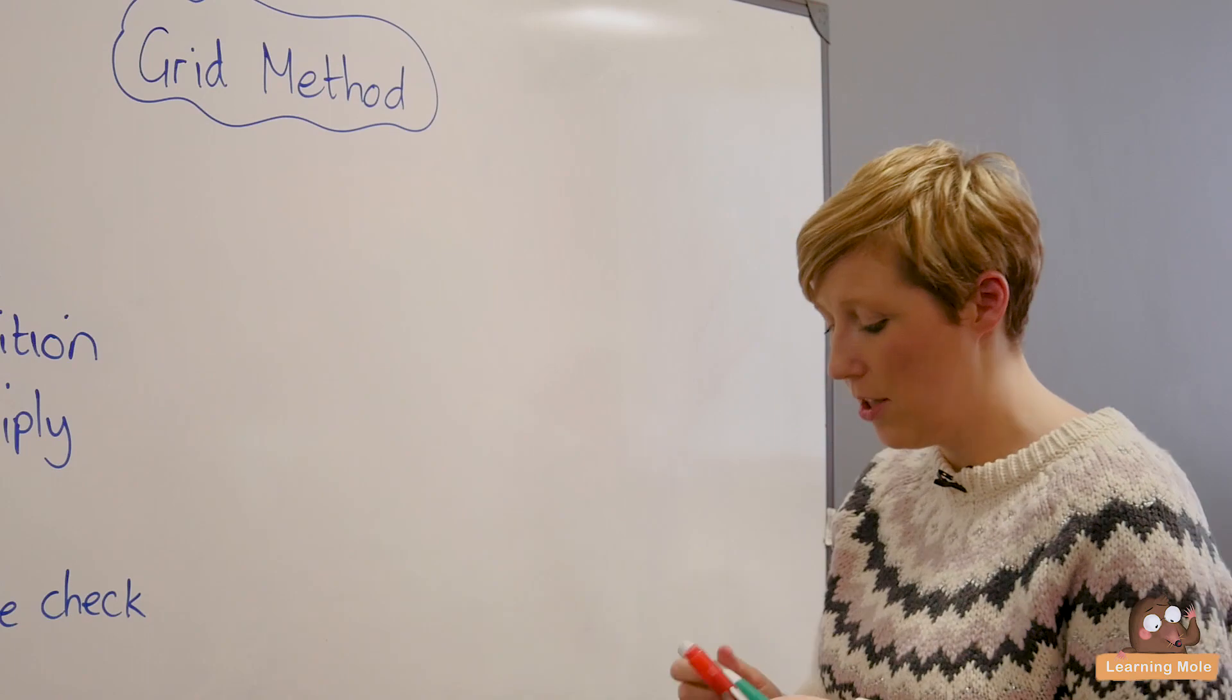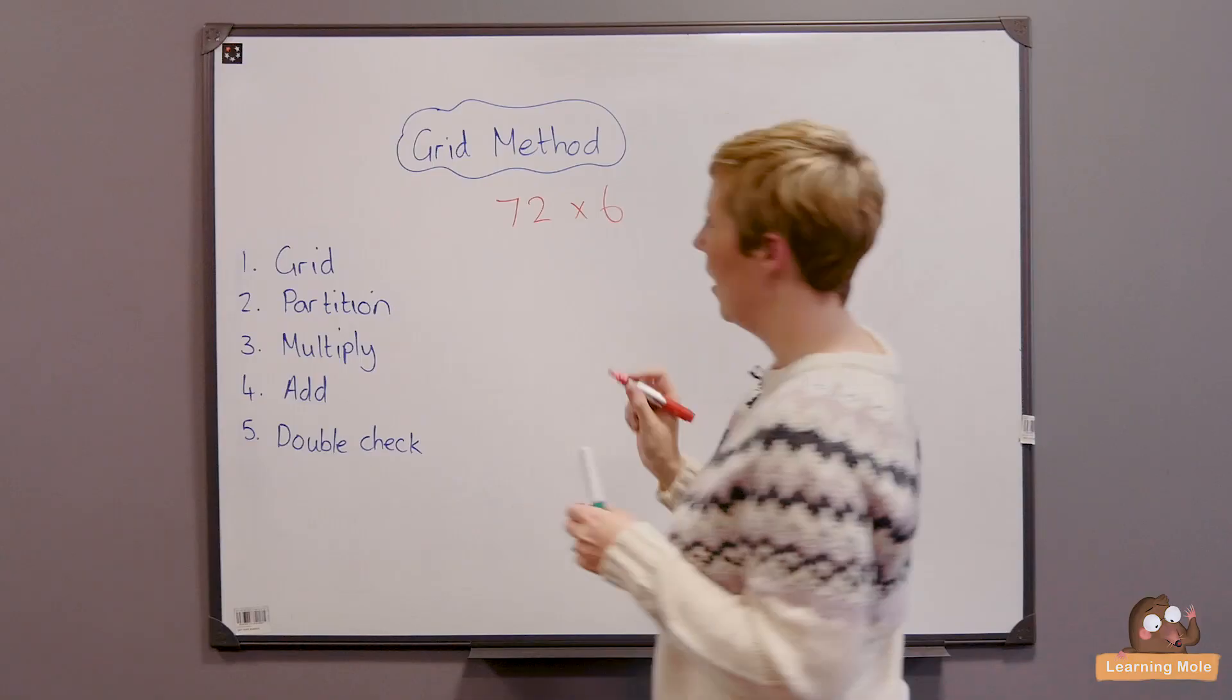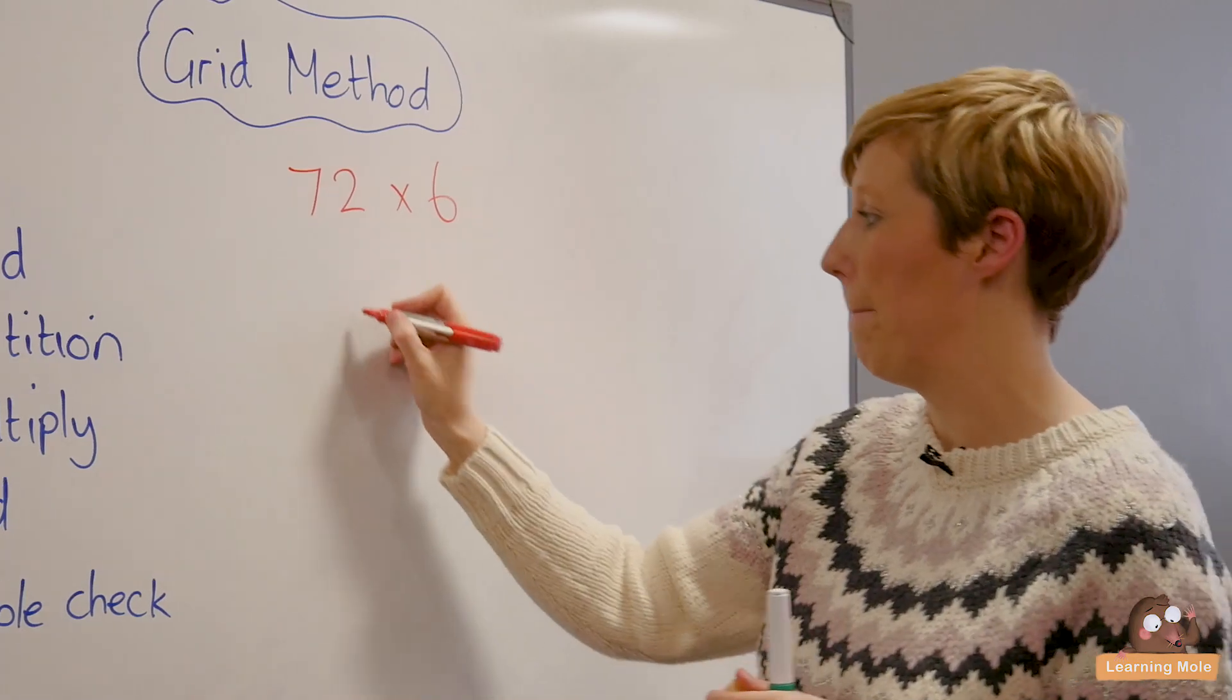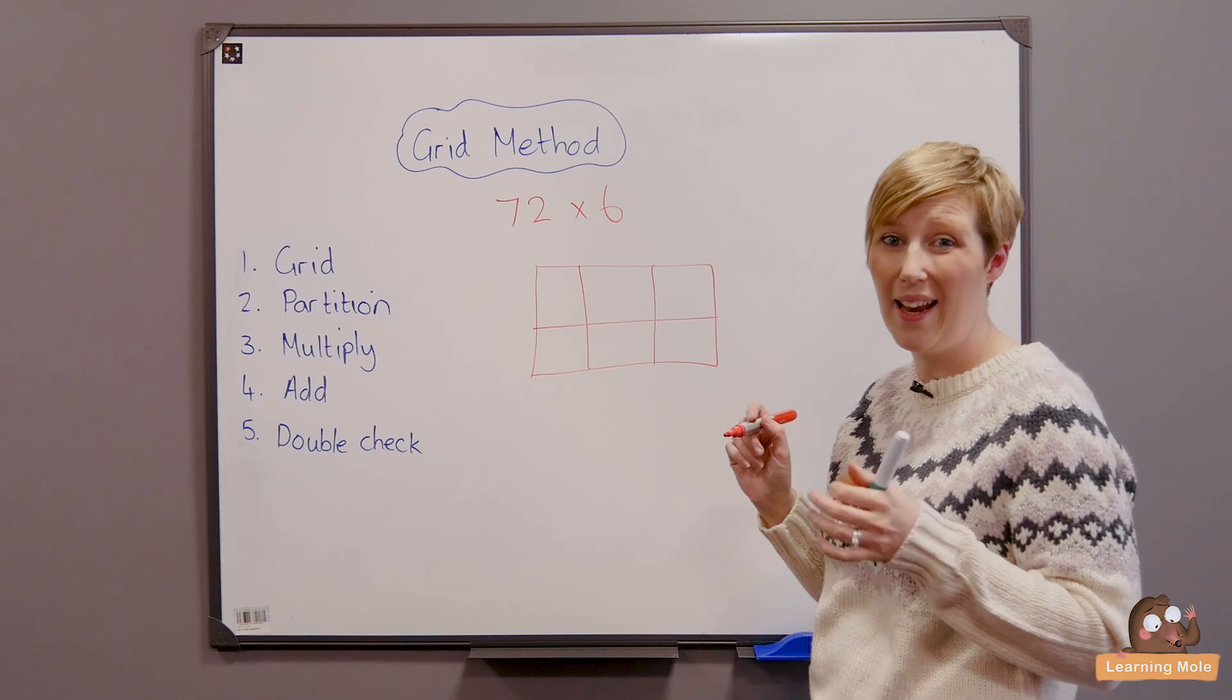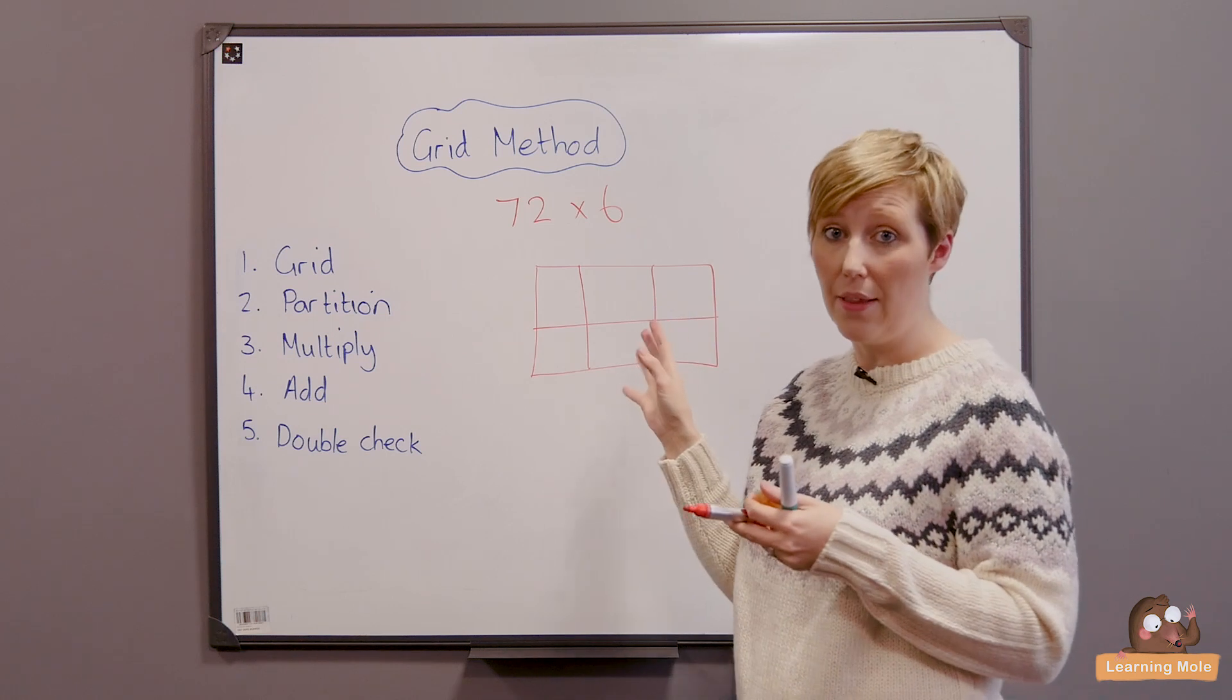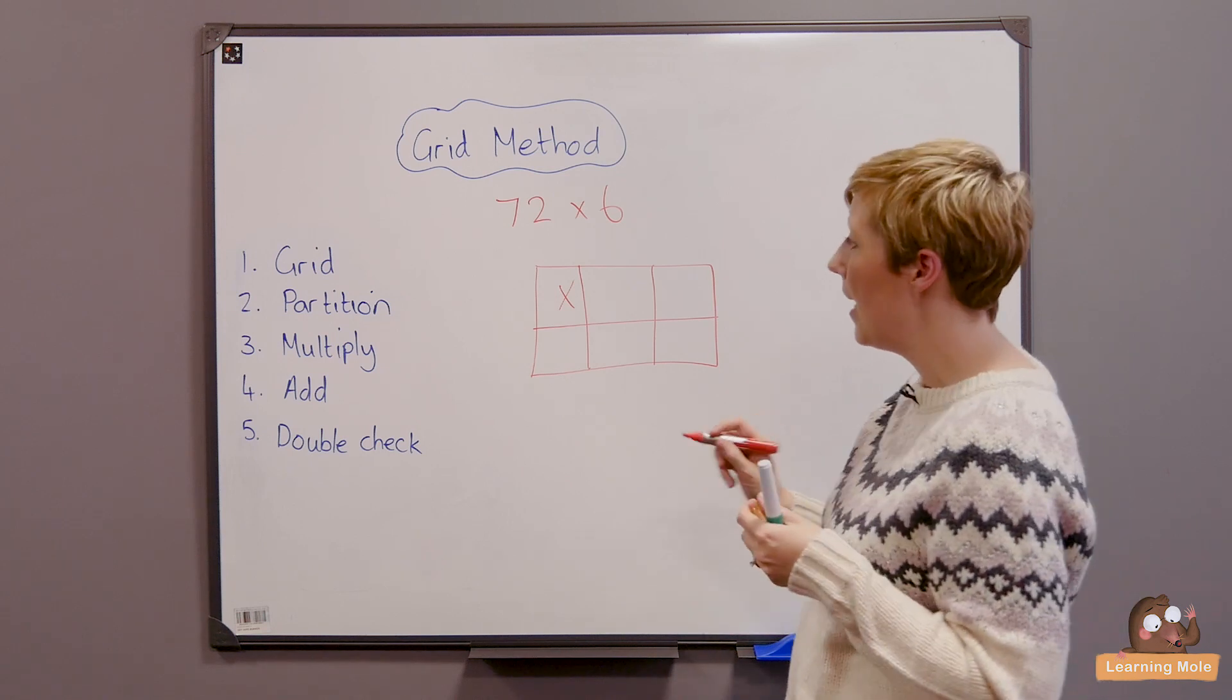So let's do, let's see, 72 times 6. Okay so I'm just going to talk through this, draw the grid. Now you might want to do this in books with rulers and everything but I'm just going to do it quickly. Actually when children are working out I would prefer that they were more focused on actually the working out rather than drawing the grid all beautifully. Okay so put my multiplication sign in here just to remind myself that I'm multiplying.